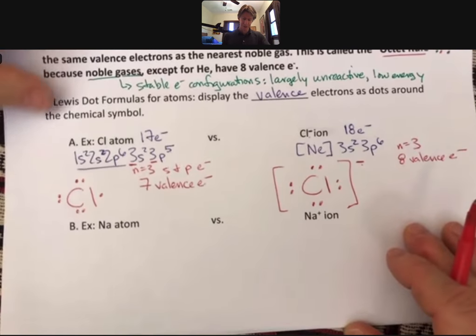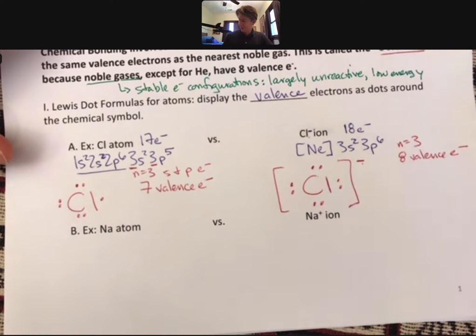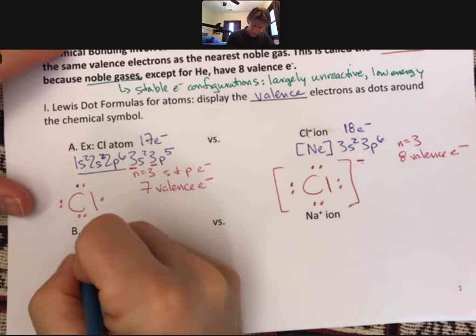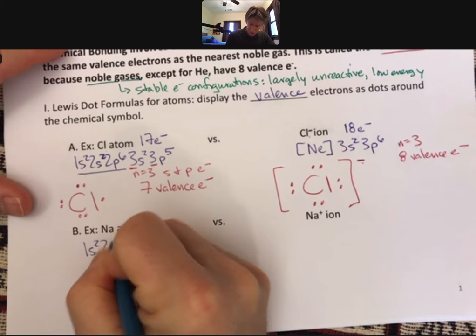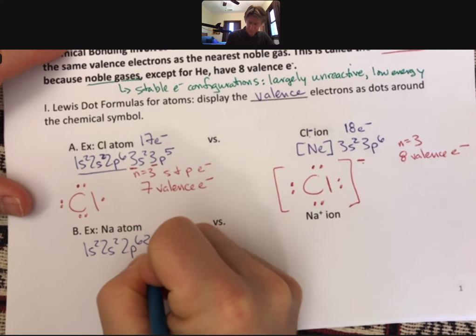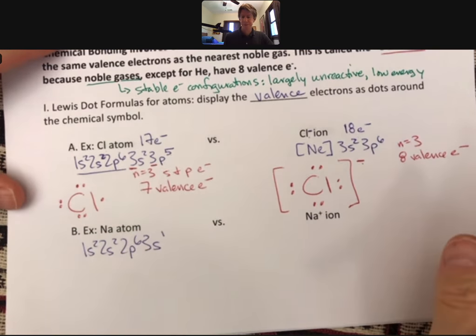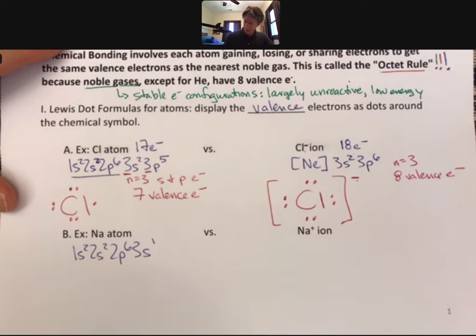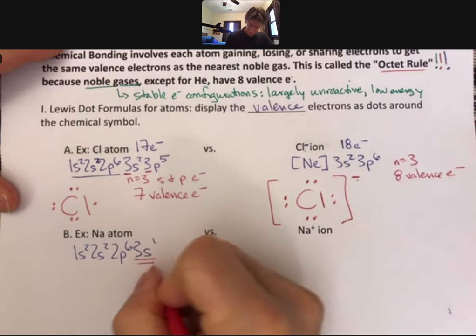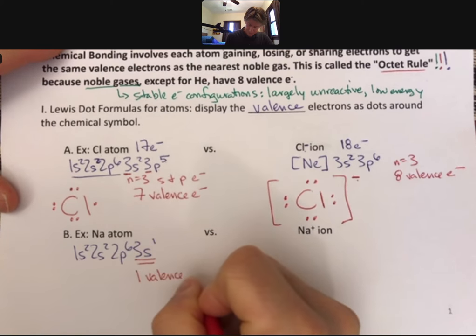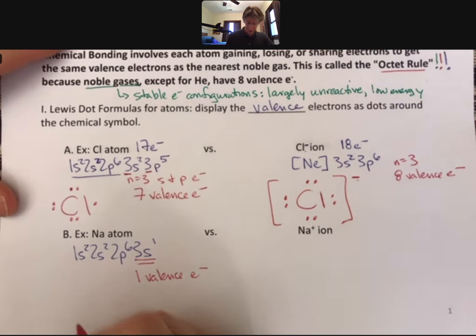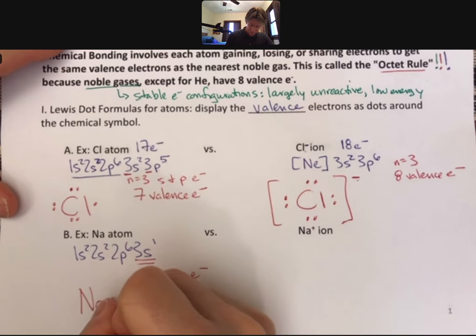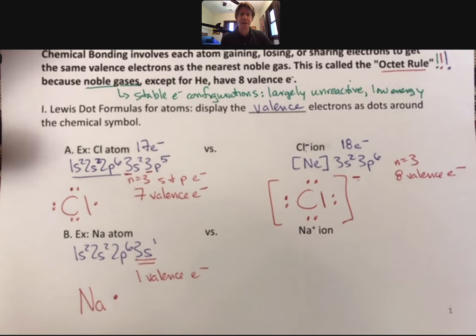Now, sodium. Sodium is element number 11. It's going to have 1s2, 2s2, 2p6, 3s1. It's going to have one valence electron. It's going to have just one dot. Again, it could be the left, right, up, or down, but as long as it's got one dot.